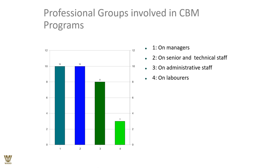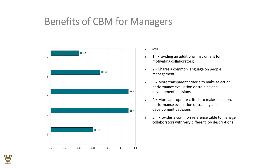The professional groups involved in competency-based management programs include managers, senior technical staff, administrative staff, and laborers. Laborers are at the lower end because they are essentially required to be good at at least one skill for which they have been employed. Managers, by contrast, should be good at multiple skills — and that is where competencies must be continuously built up for senior and administrative people.